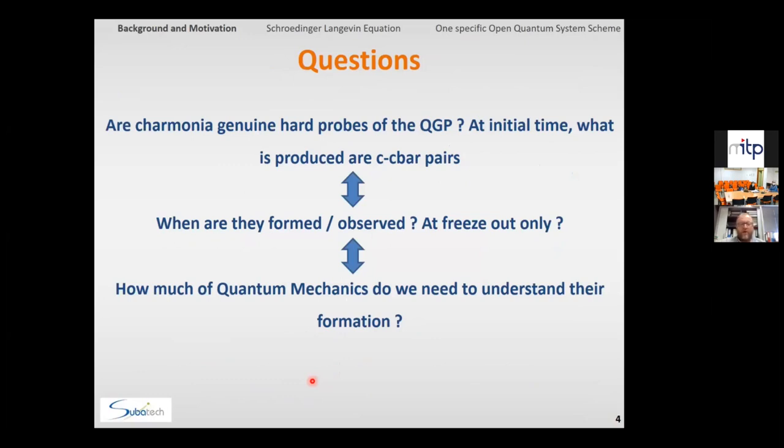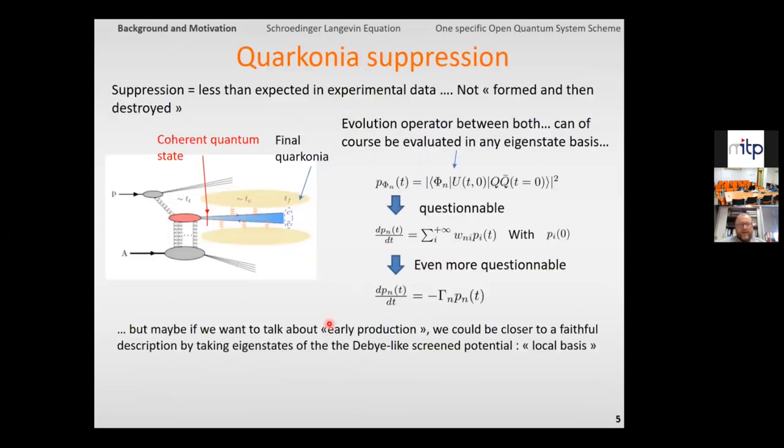After all, quarkonia, and especially charmonia, are not really produced at initial time. What is produced is a CC bar pair. And then this raises really the question of when are those quarkonia formed? When are they observed? Is it only at freeze-out that can be defined? And then, of course, a really deeply related question to this is how much quantum mechanics do we need to understand the formation? And strictly speaking, suppression was a term that was basically invented in order to denote reduction with respect to experimental data.